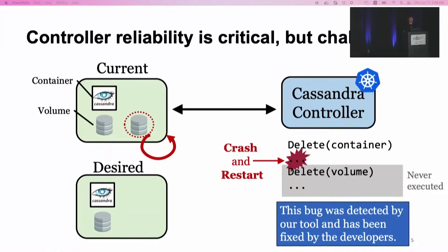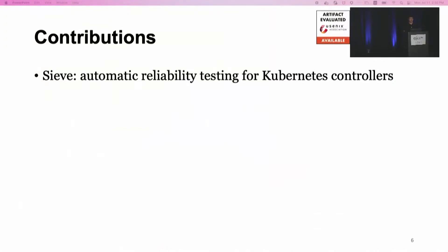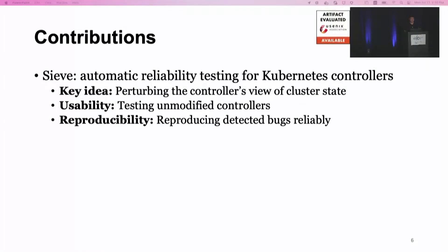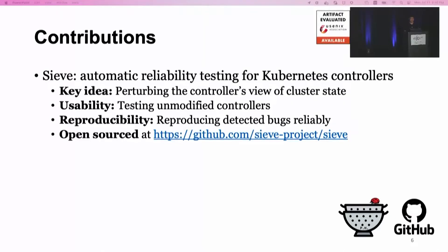Because it is really difficult for developers to anticipate all kinds of faults and events when developing controllers, to help developers detect controller bugs during the development phase, we present SIEVE — an automatic reliability testing tool for Kubernetes controllers. The key idea of SIEVE to effectively trigger a bug is to perturb the controller's view of the cluster state. SIEVE is highly useful: it tests on unmodified controllers, can reliably reproduce detected bugs, and is open source on GitHub.